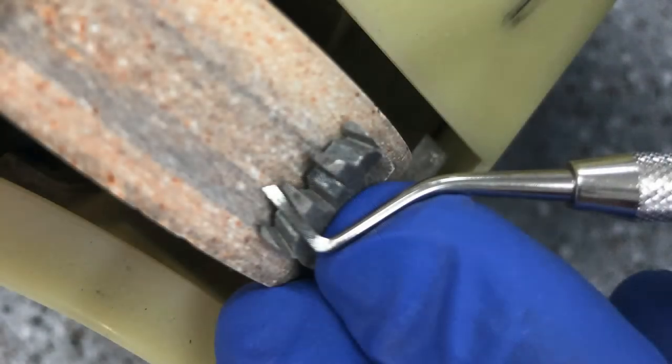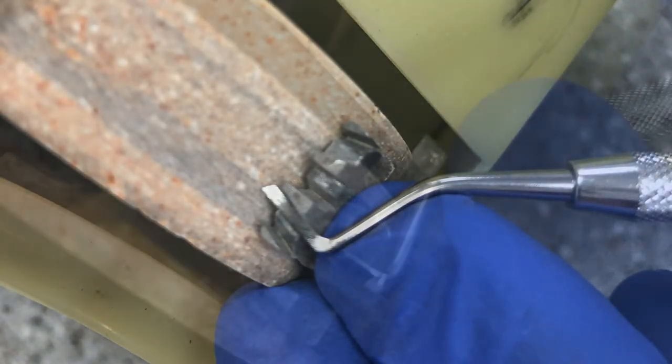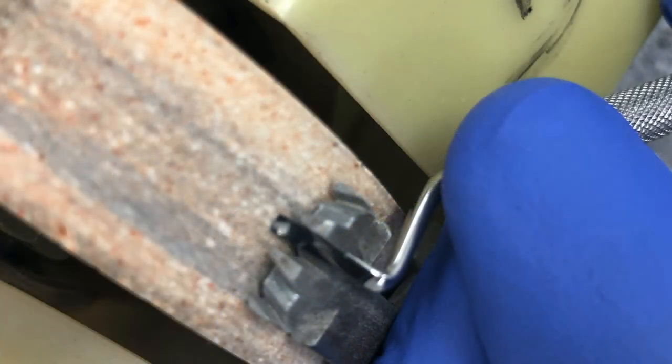Before turning the machine on and sharpening your instrument, it's always a good idea to try positioning your instrument in the guide to make sure you have the blade oriented correctly against the wheel.